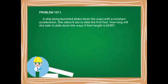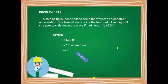Another problem: a ship being launched slides down the ways with a constant acceleration. She takes 8 seconds to slide the first foot. How long will she take to slide down the ways if their length is 625 feet? Given: s = 625 feet total, and s = 1 foot when t = 8 seconds. Initial velocity is zero since no velocity is given.